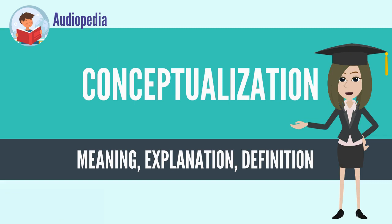An ontology is language dependent — its objects and interrelations described within a language it uses — while a conceptualization is always the same, more general, its concepts existing independently of the language used to describe it.